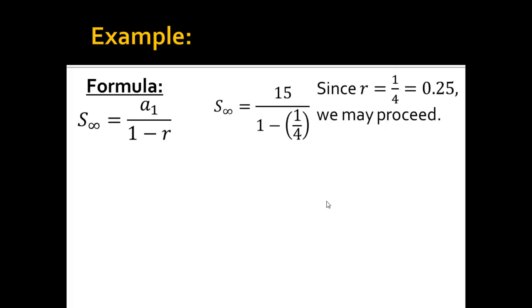So now I just plug this in, and I can do this with my calculator. I get 15 over 3 fourths, which dividing is the same as multiplying by the reciprocal, so I would say 15 times 4 thirds. Calculate that out, I get 20.